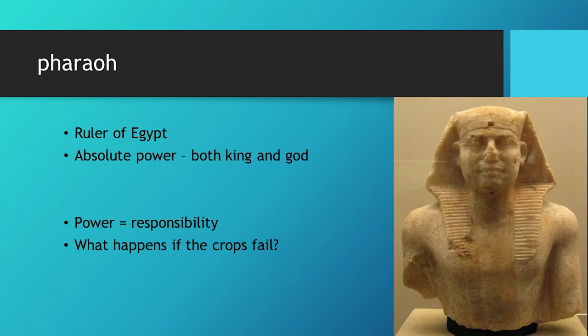So what's a Pharaoh? The absolute ruler of Egypt — basically God on earth, with all the power of a king and a god put together. But with power comes responsibility. Although you rule with absolute authority, what if there's a major drought? What if all the crops fail? Whose fault is it? It's your fault — you're the God-King, and now we're all starving.